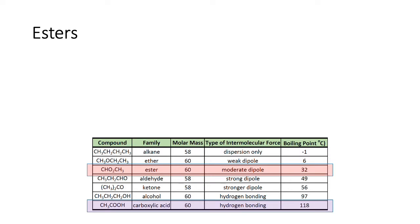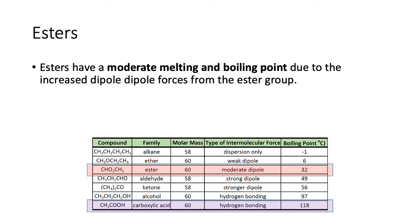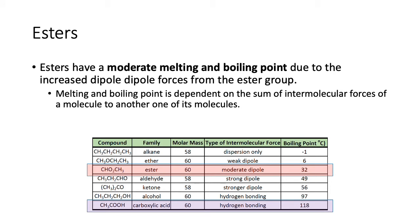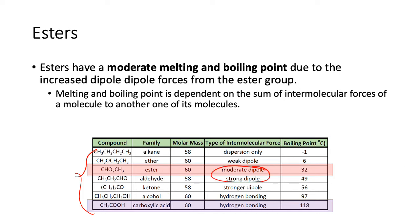Esters have a moderate melting and boiling point due to increased dipole-dipole forces. The melting and boiling point is always dependent on the sum of intermolecular forces. Here you can see compounds with the same molar mass, meaning similar dispersion forces. In terms of aldehydes and esters, aldehydes are on terminal carbons which means they've got stronger dipoles than esters, which have the double-bonded oxygens in the middle.